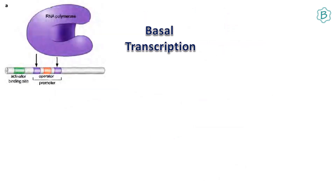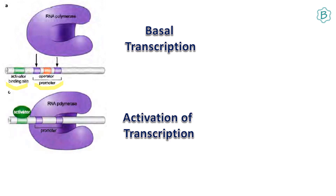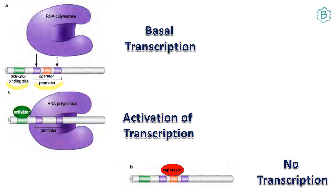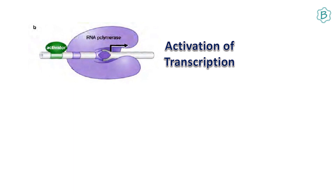Here it shows basal transcription where RNA polymerase binds to the promoter region, and there is also an activator binding site. When an activator molecule binds to the activator region, activation of transcription happens. When there is a repressor molecule, no transcription happens.